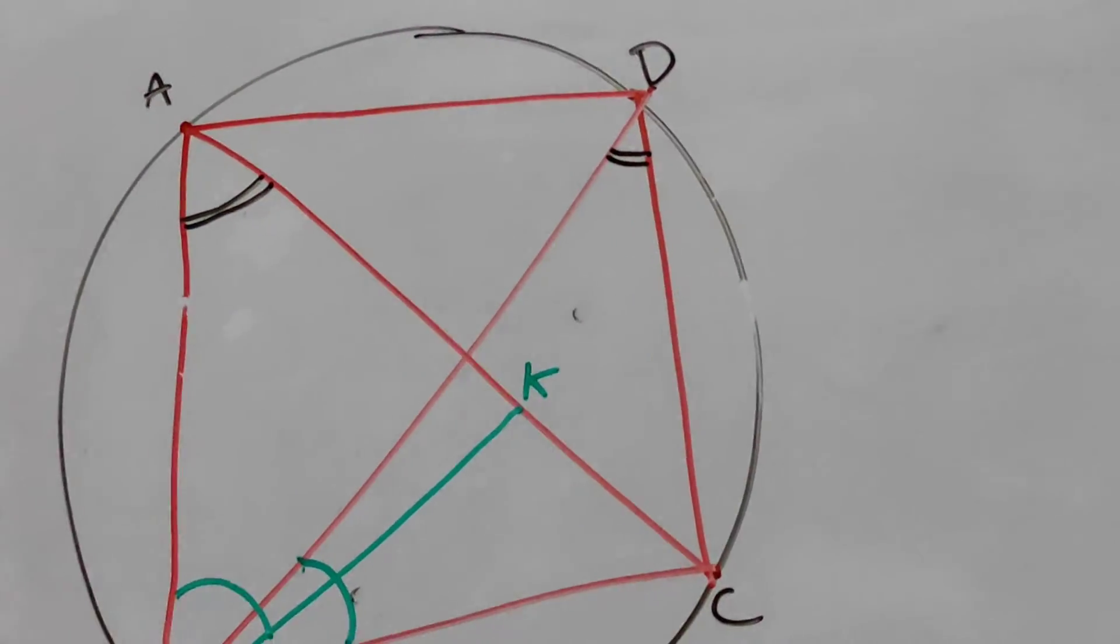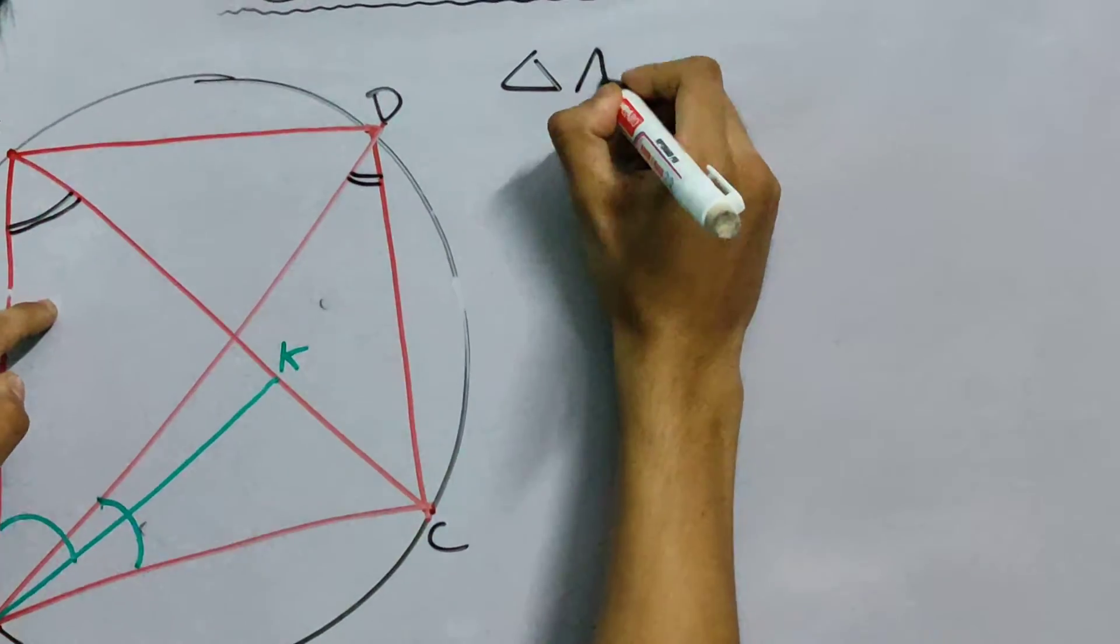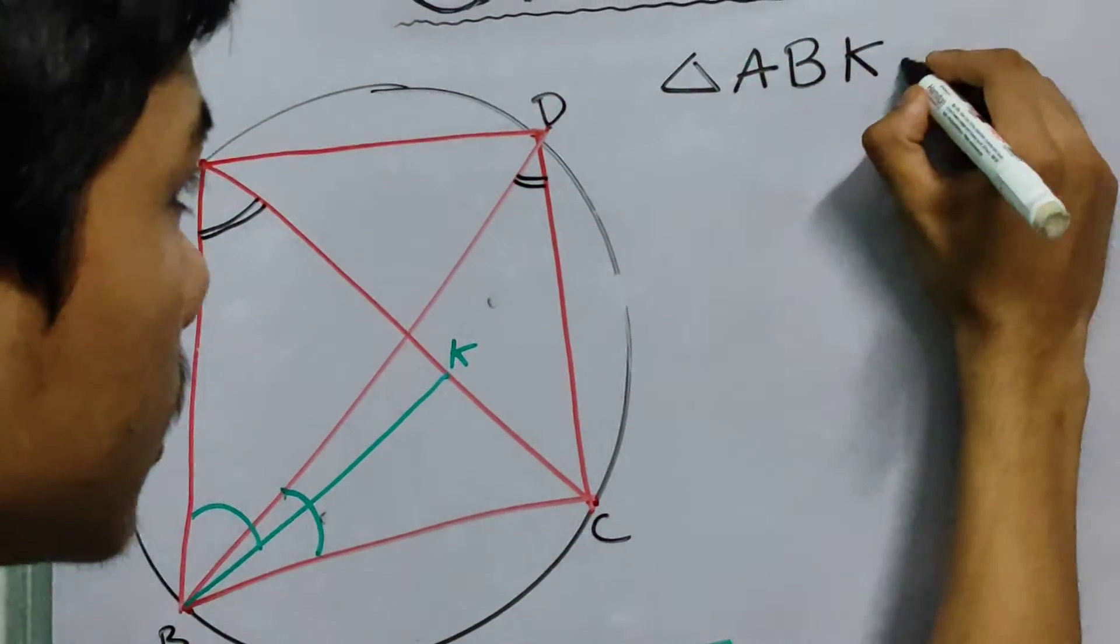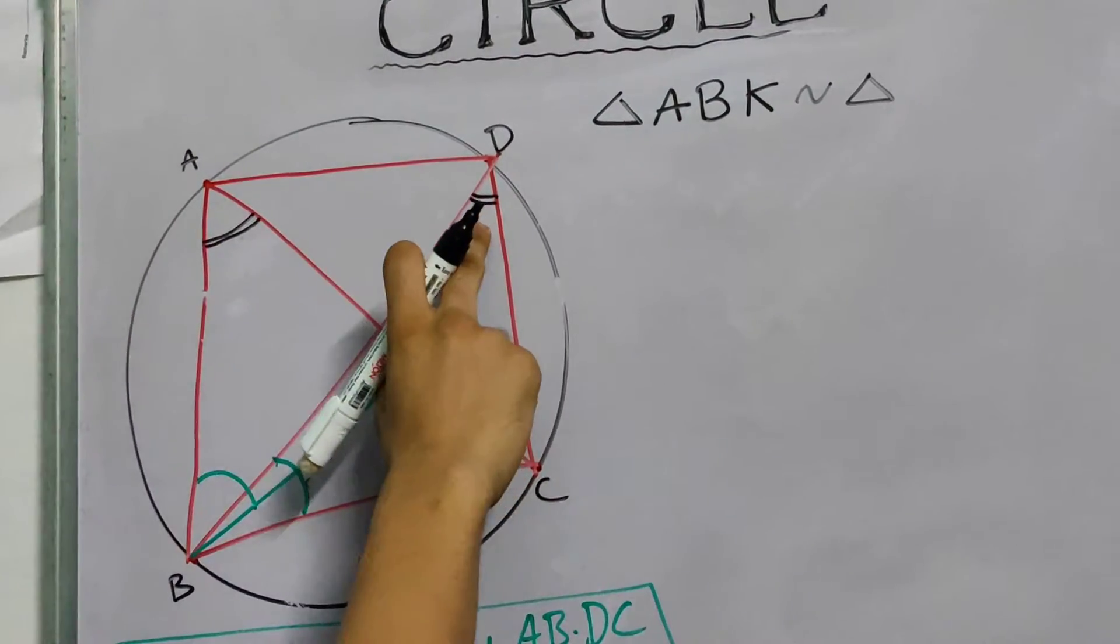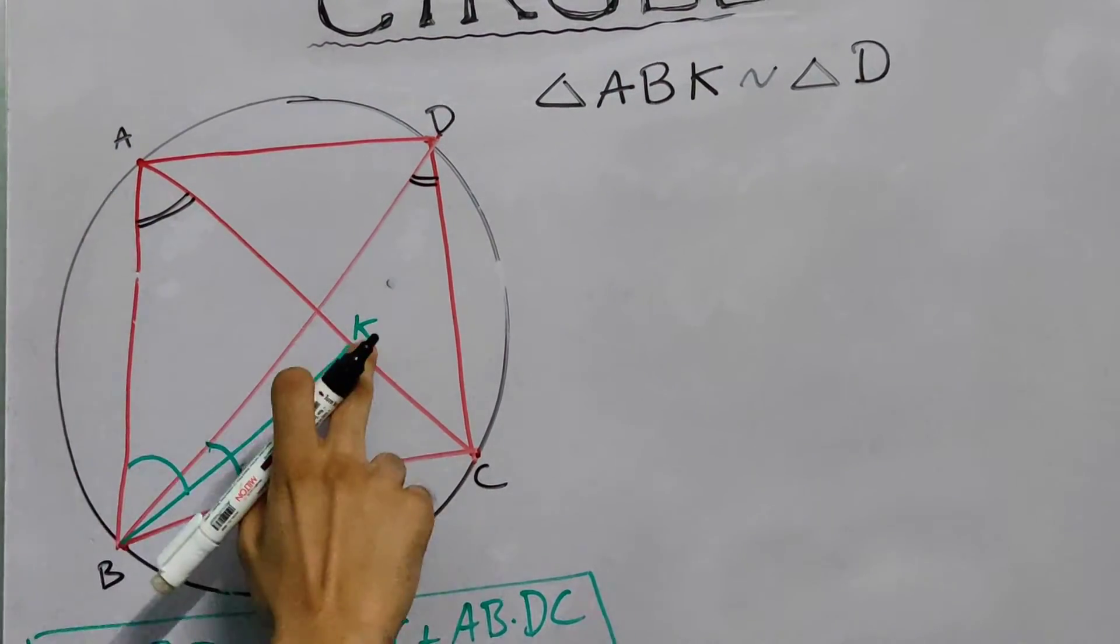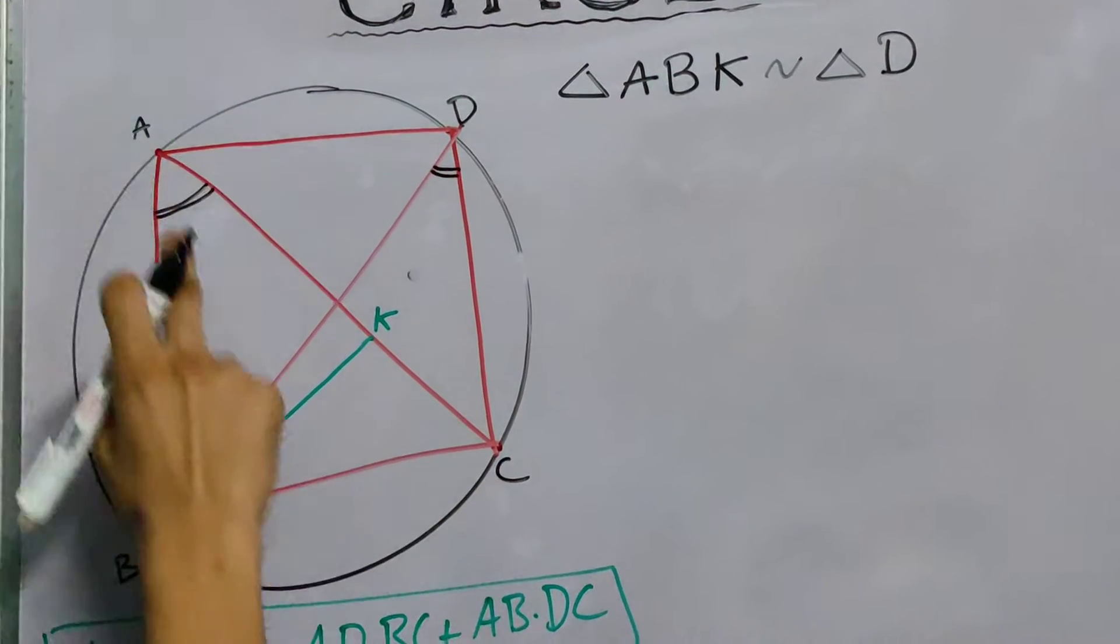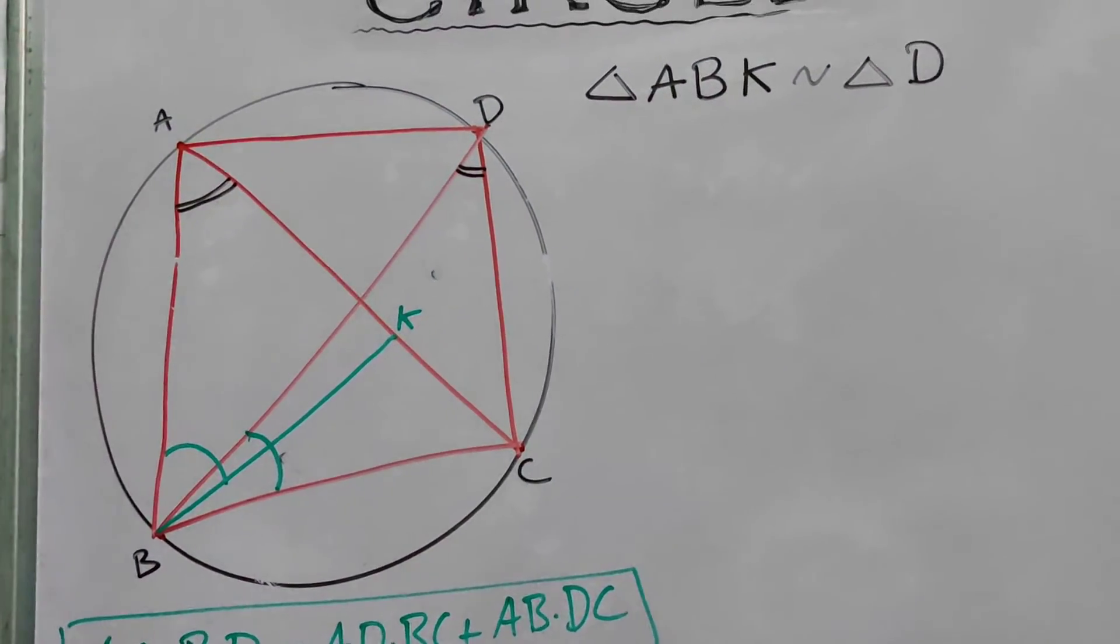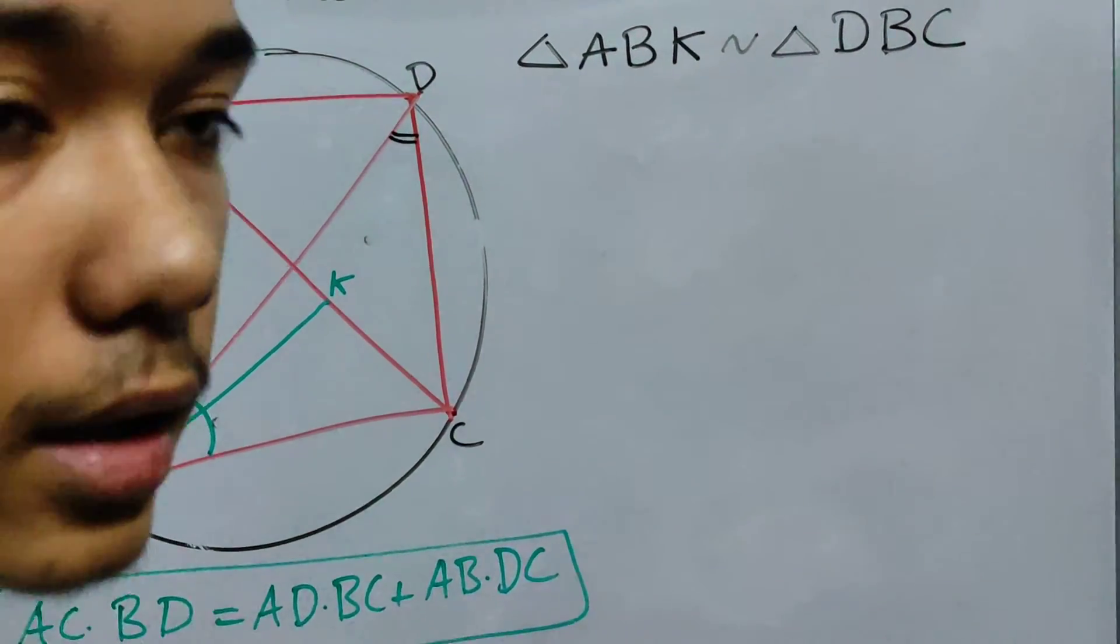From this we can say that triangle, now be careful, ABK, okay ABK, similar to triangle, notice angle A is equal to angle D. Now ABK is equal to DBC, okay, ABK, DBC, because K is constructed in such a manner. That was the clever part. So DBC, and which criteria is this? The AA criteria. Two angles equal, and these two angles are also equal.